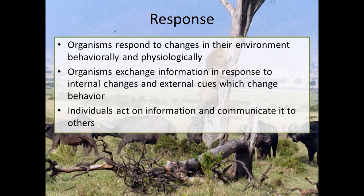Organisms need to respond to things that are happening in their environment in order to live successfully. This could be fleeing from a predator, finding shelter from a rainstorm, or growing longer roots to access water and nutrients. Generally, responses require some kind of chemical signaling that will allow for a physiological or behavioral response to occur. All individuals in an environment will need to respond to things happening around them in order to be successful.